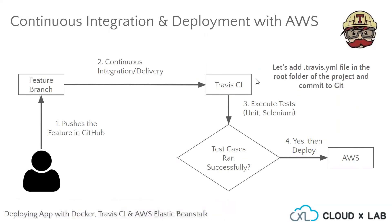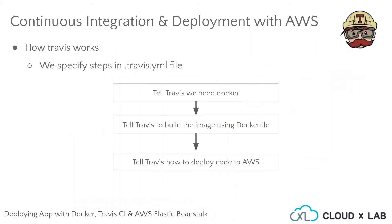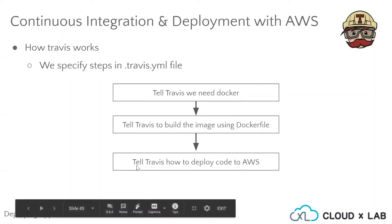Let's add a Travis.yaml file in the root folder of the project and commit it into git. Basically, what we do in the Travis.yaml file is we tell Travis that we need Docker, tell Travis to build the image using the Dockerfile, and tell Travis how to deploy the code to AWS.